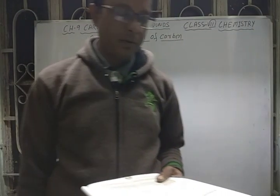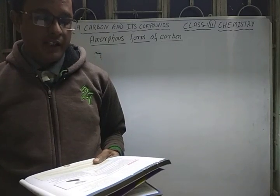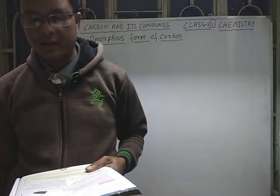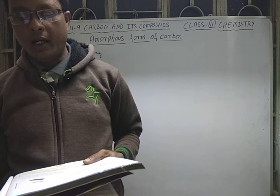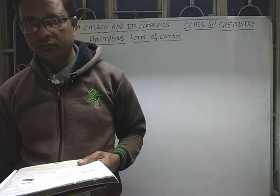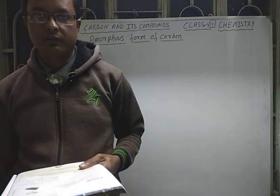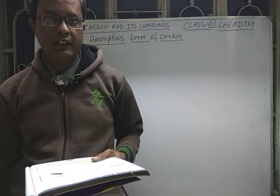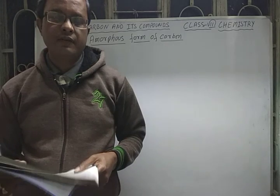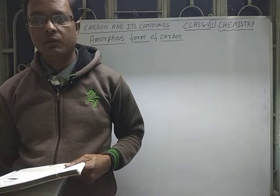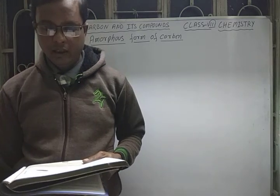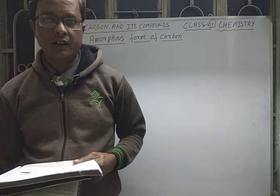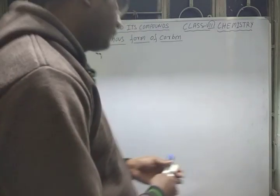The first amorphous form of carbon is charcoal. Charcoal is a black, soft, and porous solid. It is made by heating coal or wood in the absence of air. When we strongly heat coal or wood in the absence of air, we get charcoal. The process of heating in the absence of air is called destructive distillation.